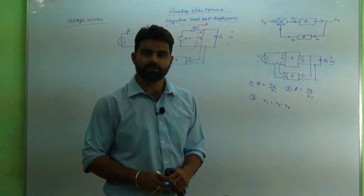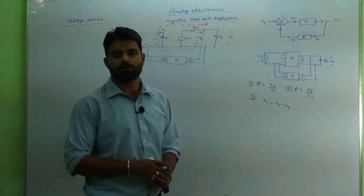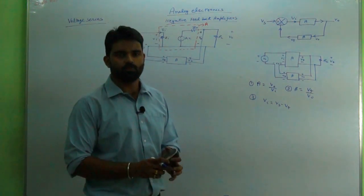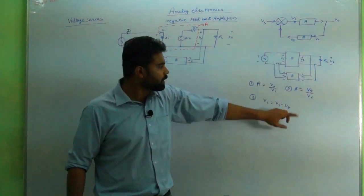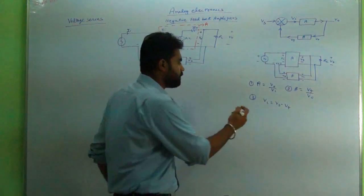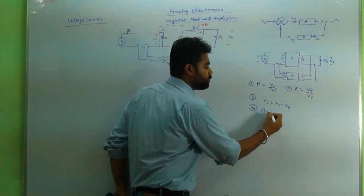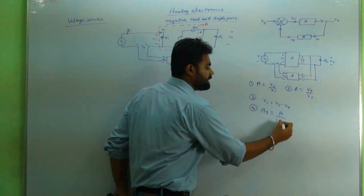This is Sumit Roy and we are discussing analog electronics - negative feedback amplifiers. As we have already discussed a few parts of negative feedback amplifiers, we have derived these parts and also derived AF = A/(1 + Aβ).